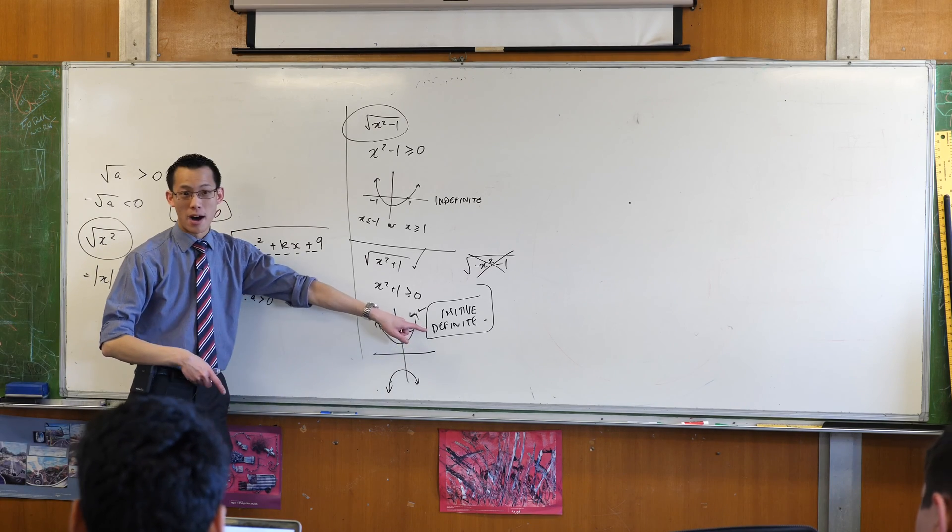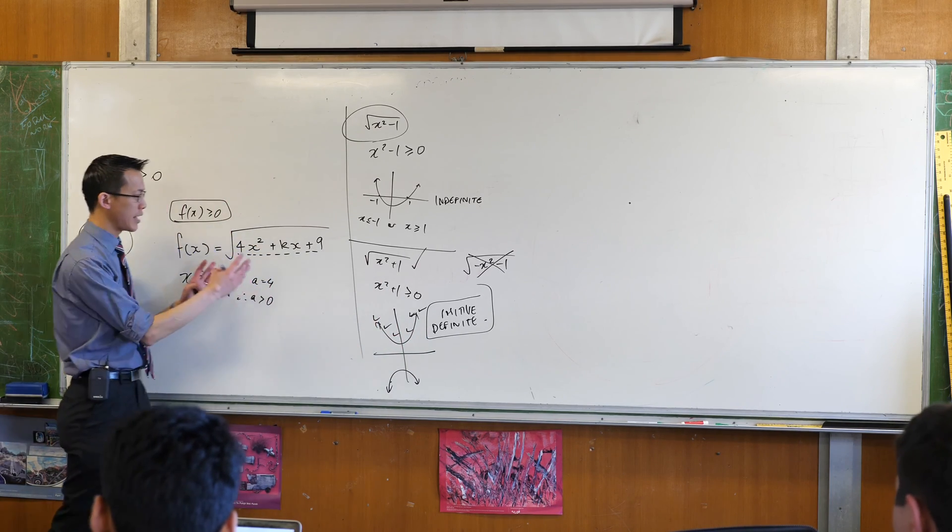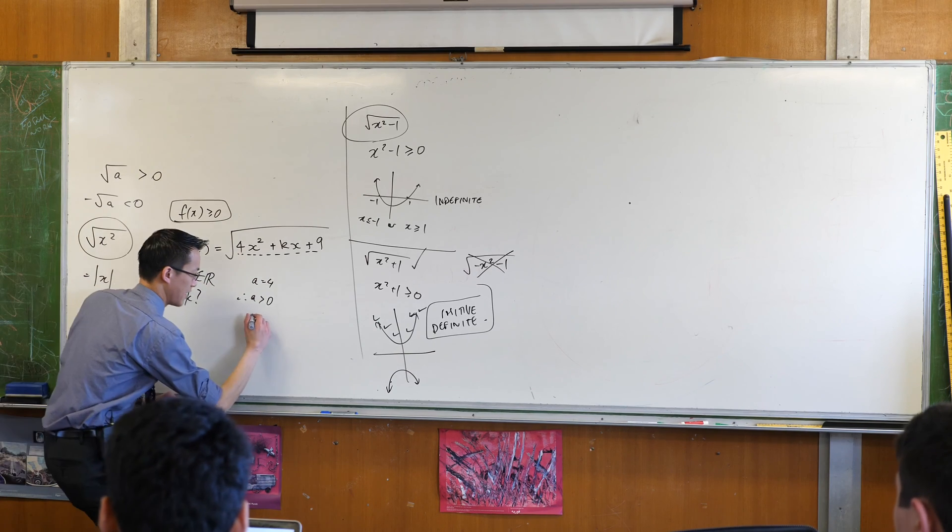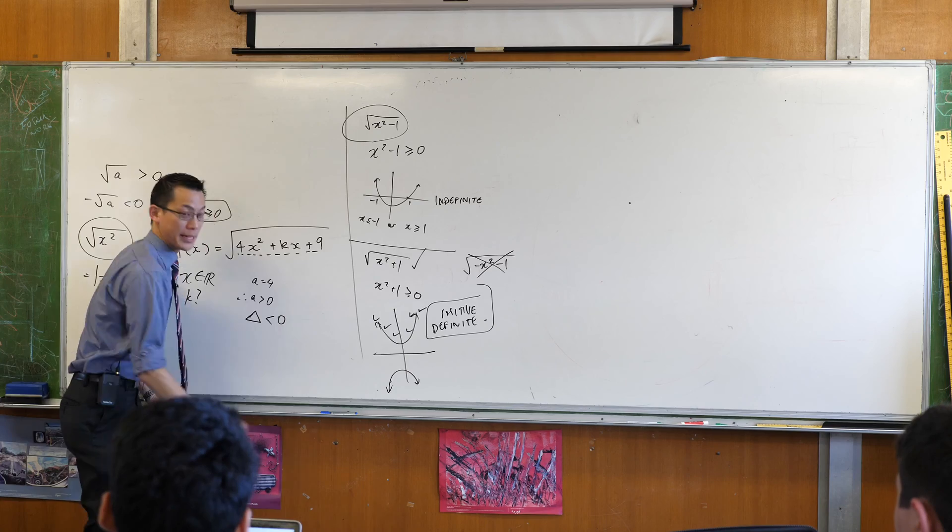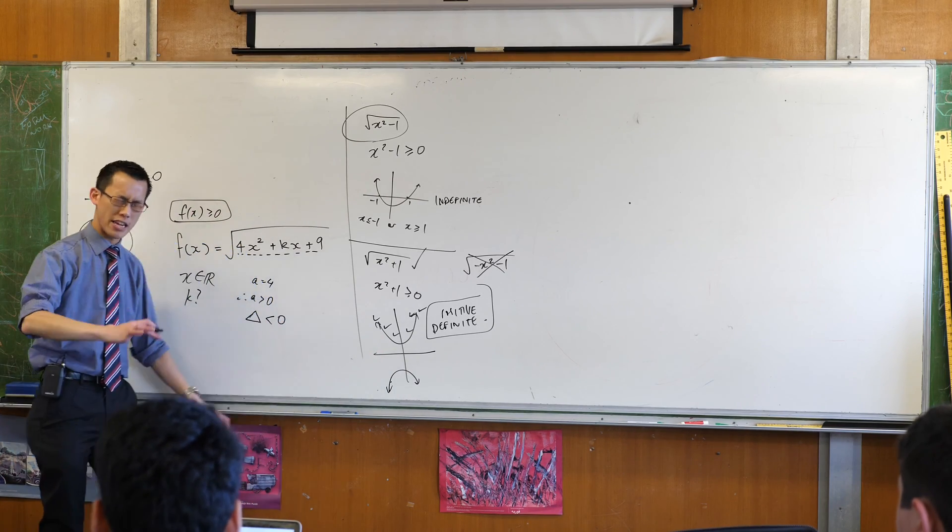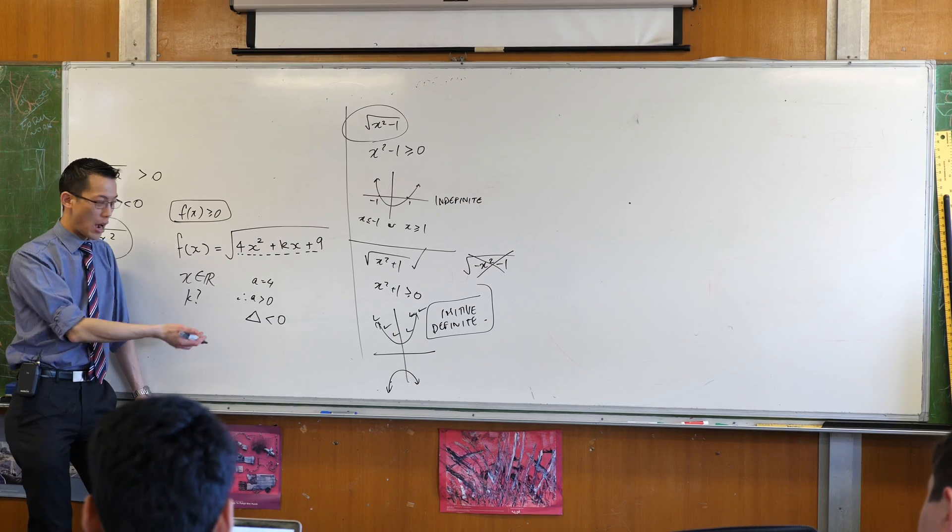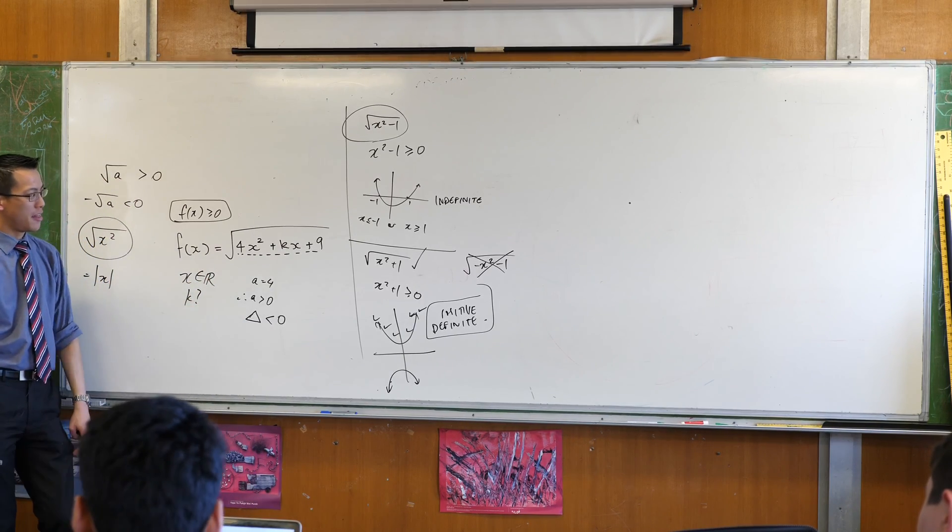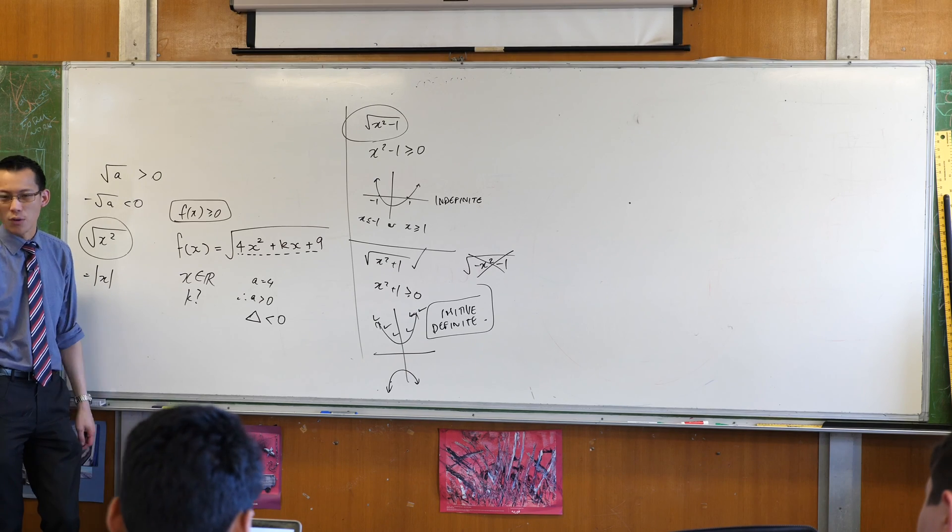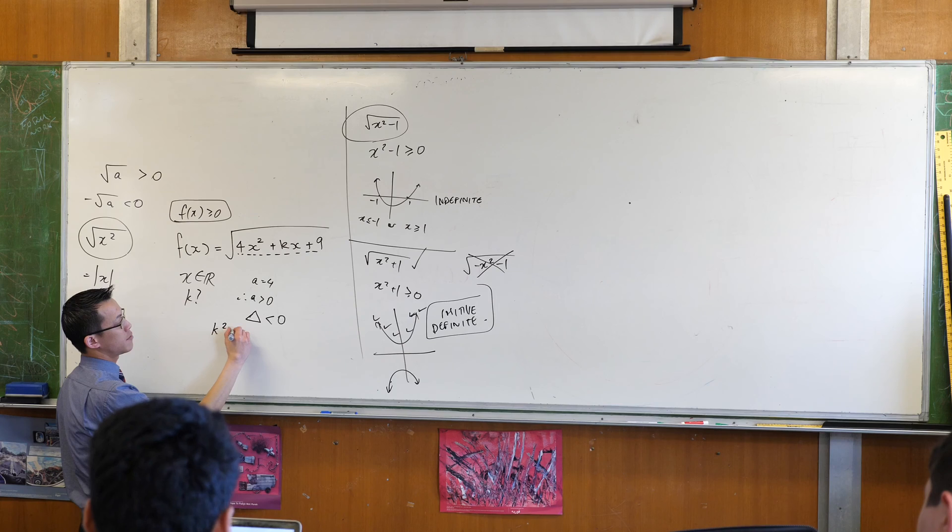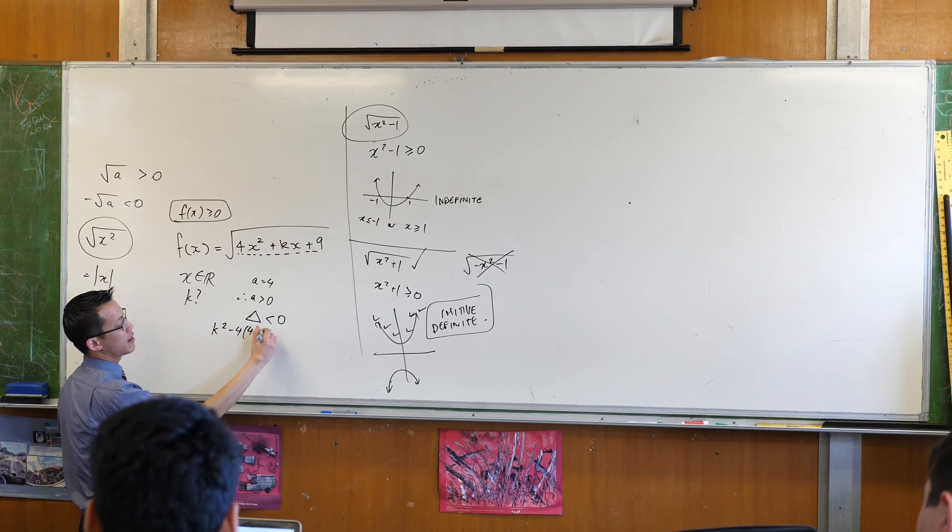Now I need to deal with the definite part. What's the condition that a quadratic has to have for it to be definite? I want the discriminant to be negative because I don't want any roots. If the discriminant is greater than or equal to zero, I'll get a root, but I don't want that. So now you can do this. Now it's actually quite straightforward to solve.